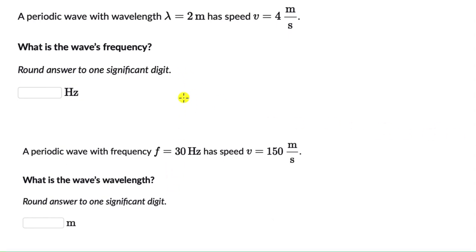All right, we have two questions on the wave equation. The first one is a periodic wave with wavelength of 2 meters. It has a speed of 4 meters per second.